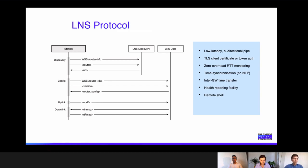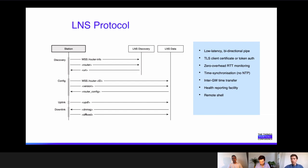On the LNS protocol side, the station connects to the configured endpoint using its credentials and advertises its version and feature subsets. The LNS discovery endpoint responds with a URI endpoint to which the station connects in the next phase. There, the station advertises itself again and receives the actual radio front-end configuration, including channel allocations. The radio is started up and from that point you are in a steady state where uplink messages are forwarded to the network server and downlink messages are received and scheduled on air. This is designed for low latency, security over TLS, and supports features like time synchronization, health reporting, and remote shell for centralized gateway monitoring.